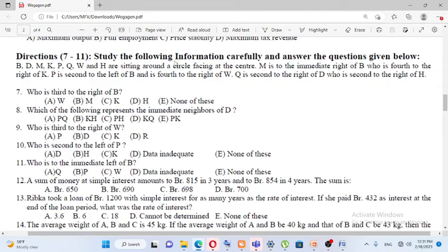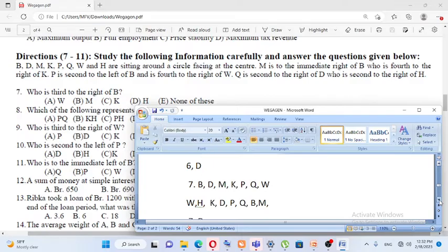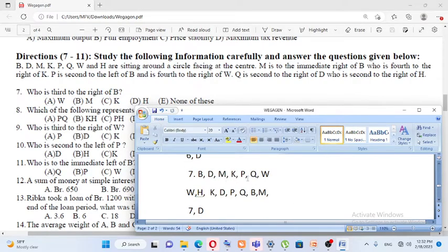Study the following information carefully and answer the questions given below. B, D, M, K, P, Q, and W and H are sitting around a circle facing at the center. M is to the immediate right of B, who is first to the right of K. P is second to the right to the left of B.